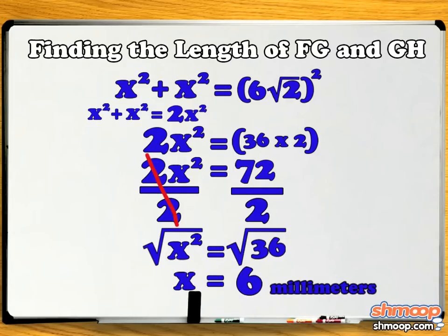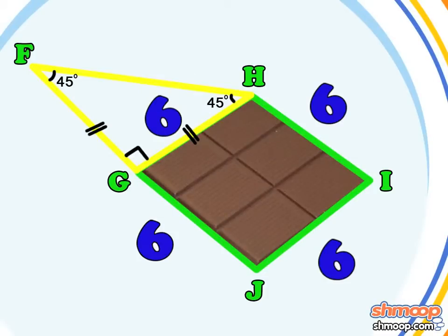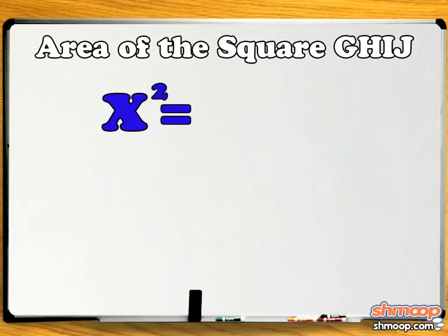Now, we know the length of each side of the square as well as the other two sides of our triangle. To get the area of our square, we take our X-value, the length of one of the sides, and square it, making it 6-squared, giving us 36.